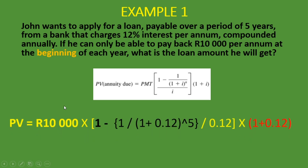Present value of an annuity due equals 10,000 rand times 1 minus the sum of 1 divided by (1 plus 0.12) to the power of 5, then divided by 0.12, multiplied by 10,000, and finally multiplied by the additional period of (1 plus 0.12) — shown in red. The answer is 40,373 rand 49 cents. That is the present value of an annuity due. Quick note: the present value of an annuity due will always be higher than the present value of an ordinary annuity, because with an annuity due you're calculating it for one additional period.